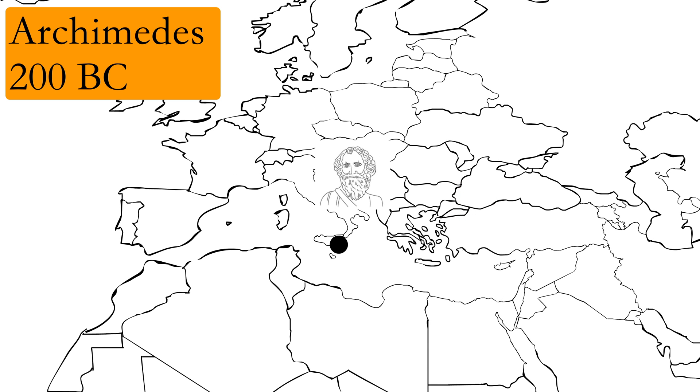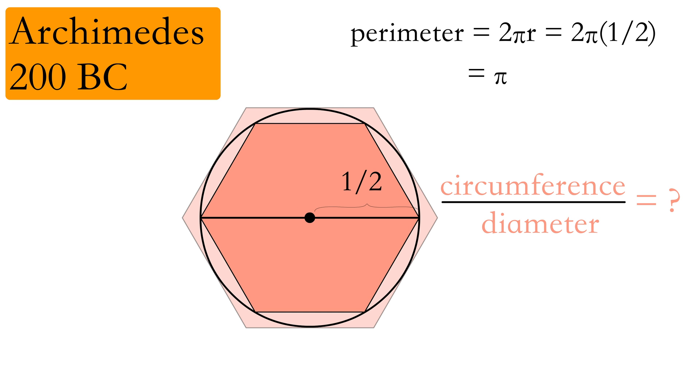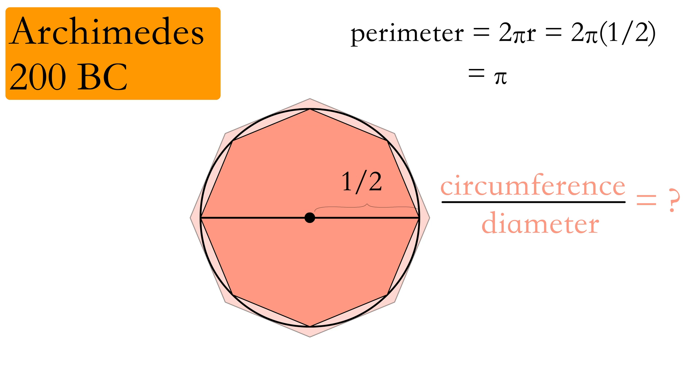Around 200 BC, Archimedes was the first to devise a precise method to find the value of Pi. What Archimedes did was he inscribed a polygon inside a circle and outside the circle. He set the radius of the circle to be one half, making the perimeter of the circle set to Pi. Finding the perimeter of a polygon could easily be found, so as the sides of the polygons increased, the closer it approximated the value of Pi.